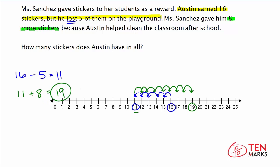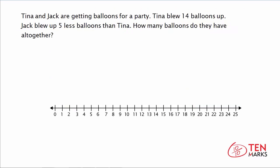Let's try another word problem together. Tina and Jack are getting balloons for a party. Tina blew up 14 balloons, and Jack blew up 5 less balloons than Tina. How many balloons do they have all together? Before we find the total, we need to know how many Jack blew up. We already know Tina has 14, and Jack has 5 less than Tina, so we need to find his amount first.